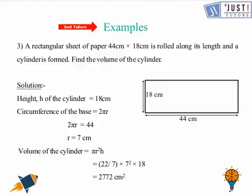Let's look at one more example. A rectangular sheet of paper with dimensions 44 and 18 centimeters is rolled along its length and a cylinder is formed. We need to find the volume of that cylinder. The height is 18 centimeters, which is the breadth of the rectangle. To find the radius, this particular length will be the circumference of the cylinder. The base of the cylinder which is a circle will be 2 π r, the circumference equals the length of this rectangle. We calculate the value of r, it's 7 centimeters.